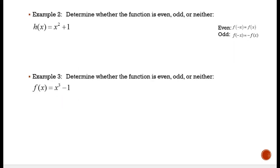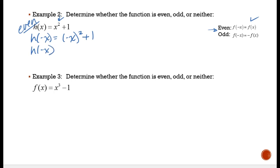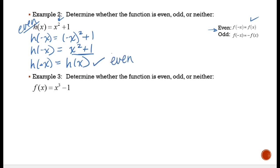Example 2: determine whether the function is even, odd, or neither. Looking at my function, I first want to decide which test to run. There's a squared exponent there, so I'm guessing it's probably even. I'm going to try the even test: take h(negative x) and plug in negative x. A negative times a negative when squared gives a positive, so you get x squared plus 1. That is the original function h(x). So we've proven that h(negative x) is equal to h(x) — this is an even function.